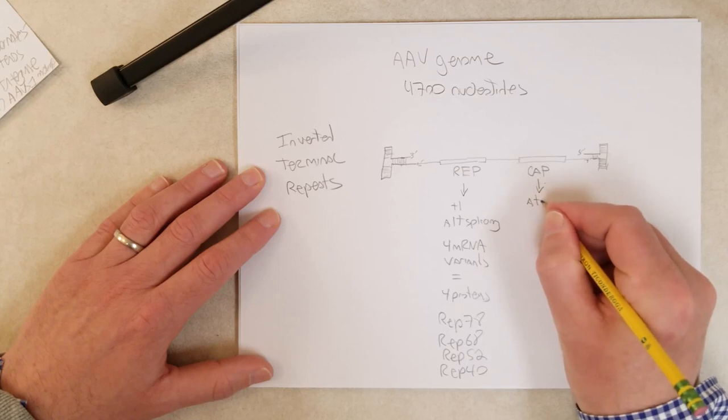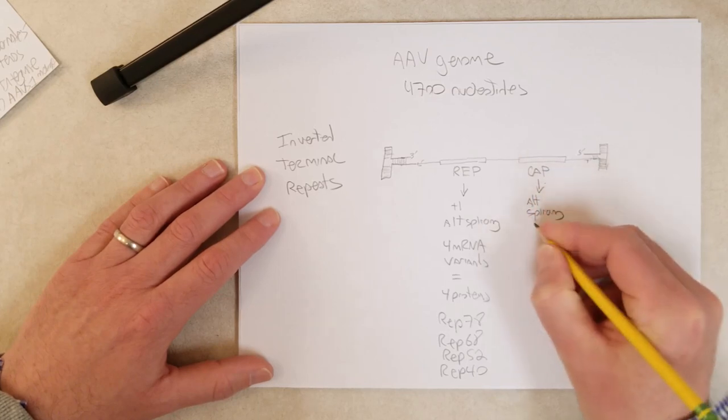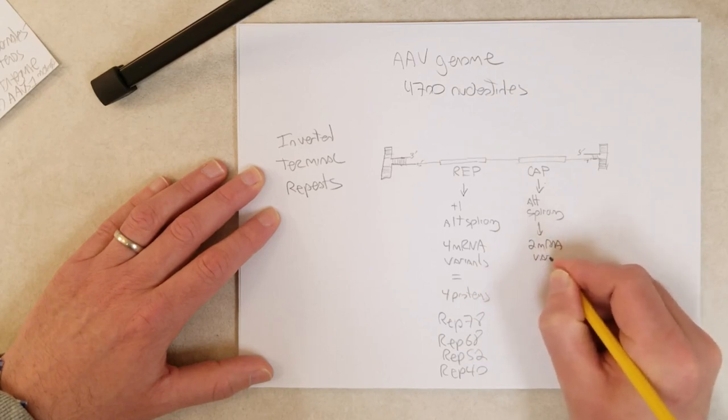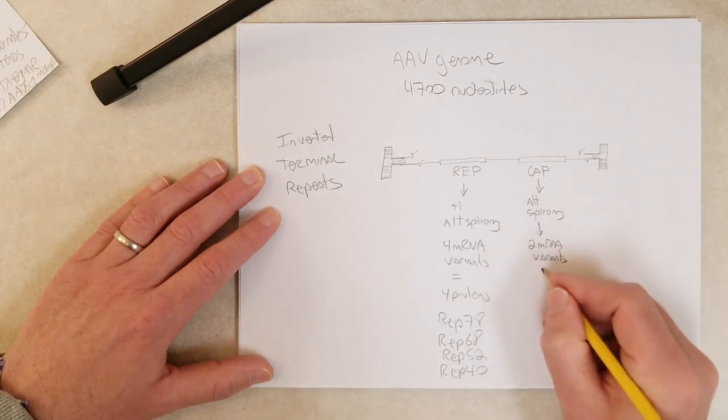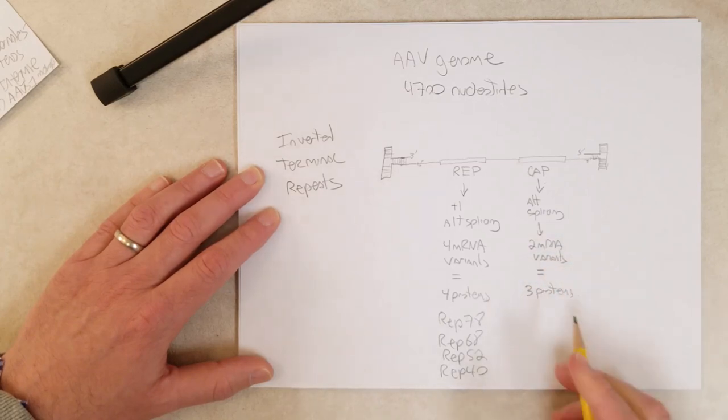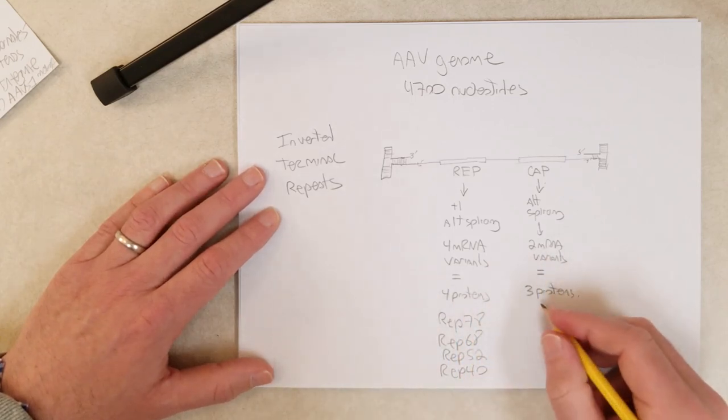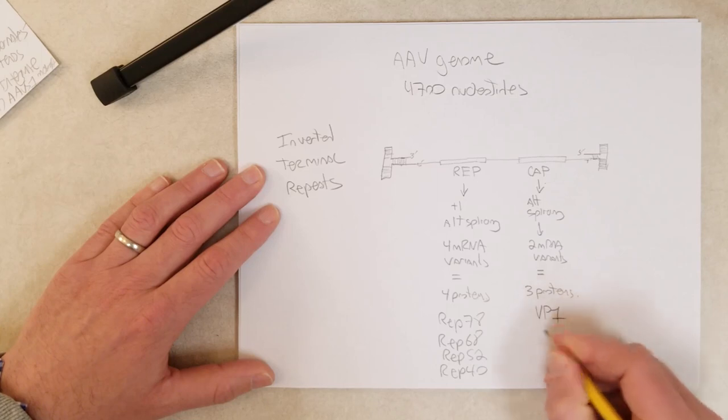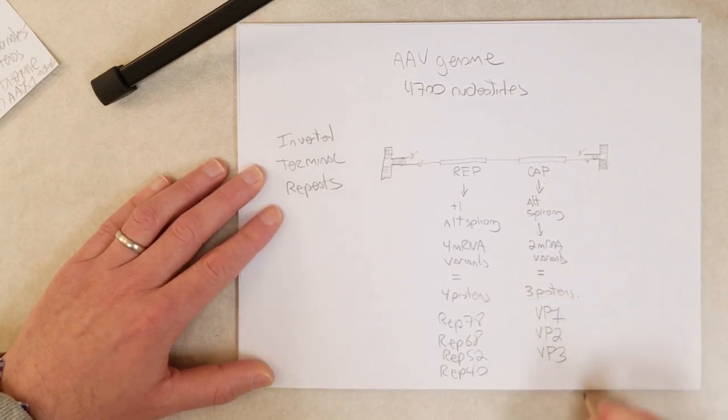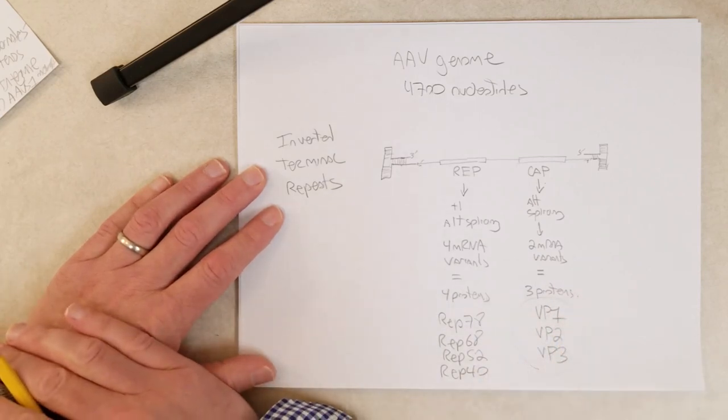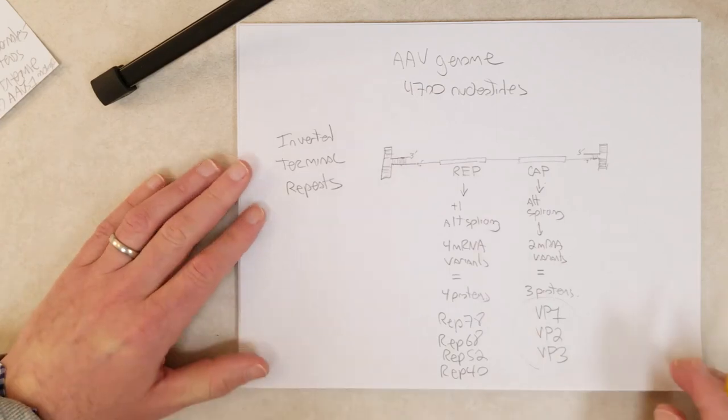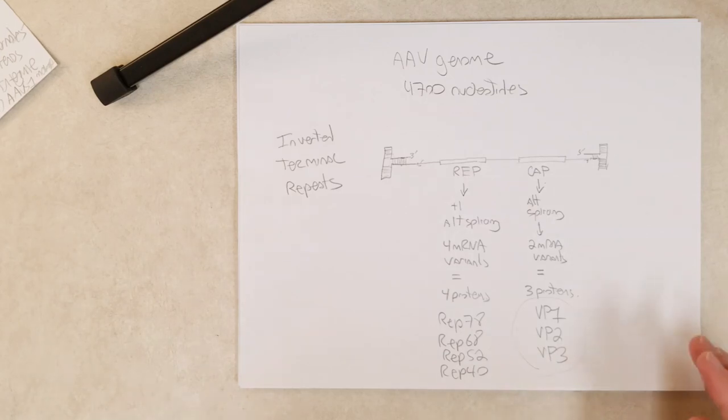And CAP, due to alternate splicing, makes two mRNA variants. And we get three proteins because there's an alternate translation start site in one of those messenger RNAs. So one of those messenger RNAs, when it is translated, can make one or the other protein, encodes one or the other protein. So those proteins are called VP1, VP2, and VP3. And these are the capsid proteins. So these work together to make that icosahedral capsid.